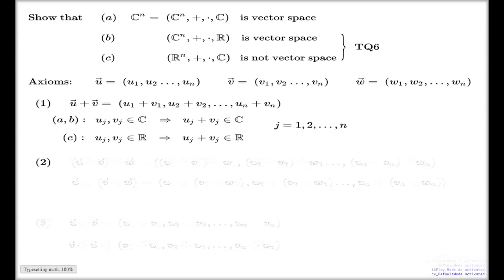Axiom number two, this is the associative law. Here's my left-hand side of the associative law. If I do the complete expansion for this, the way we do the addition for vectors, that will be the expression like this. It's the first component.